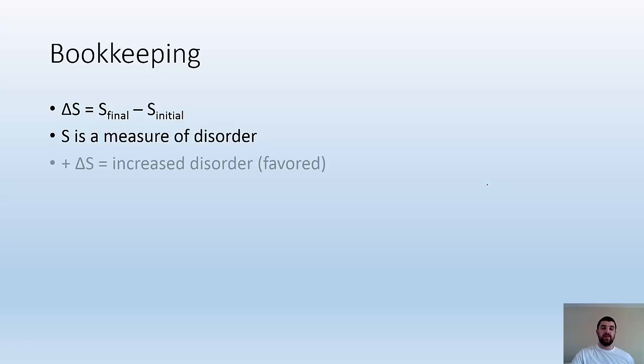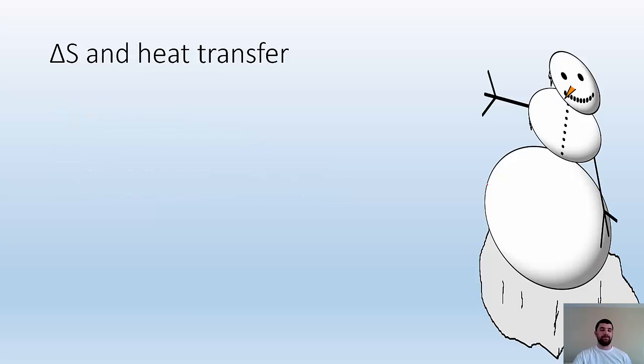Some bookkeeping. The change in entropy is equivalent to the final entropy minus the initial entropy. S is a measure of disorder. A positive change in S means that you've increased the disorder, made it more chaotic, which is favored. If you had a negative delta S, that tells you you become less disordered, more ordered, which is unfavored.